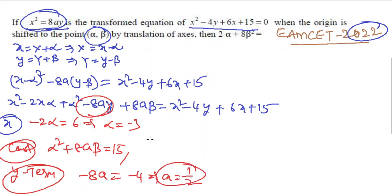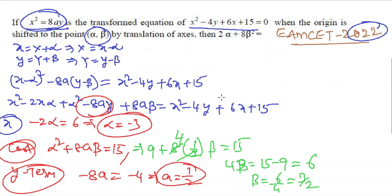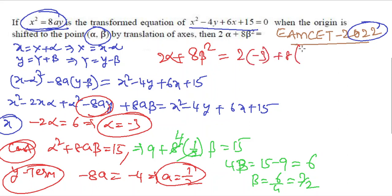Now computing 2α + 8β²: 2(−3) + 8·(3/2)² = −6 + 8·(9/4) = −6 + 18 = 12. Therefore 2α + 8β² = 12.